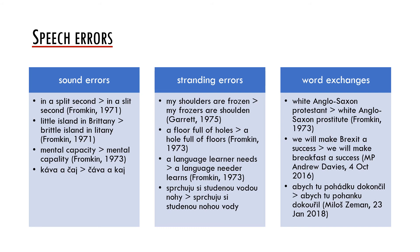The third type of errors are word exchanges — typical slips of the tongue such as 'white Anglo-Saxon prostitute' instead of 'white Anglo-Saxon Protestant,' or funny slips by politicians such as 'we will make breakfast a success' instead of 'we will make Brexit a success.' As already mentioned, some logically possible speech errors do not occur. For example, stranding errors like 'my frozers are swollen' are quite frequent, whereas possible errors like 'shoulder mice froze' simply never happen.